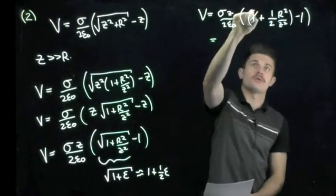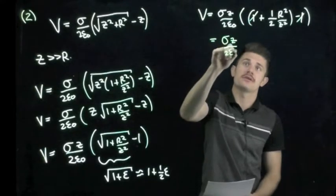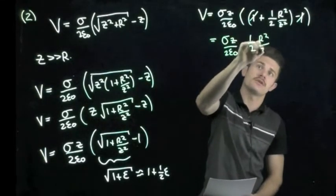So we can see that the one and the one will cancel and we end up with sigma z over two epsilon naught times one half r squared over z squared.